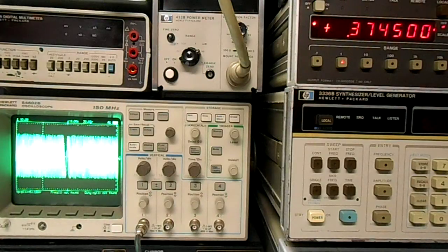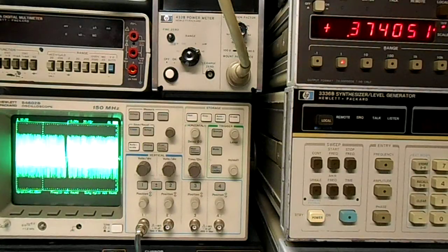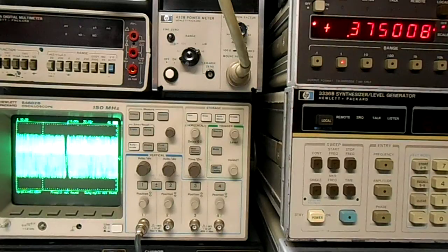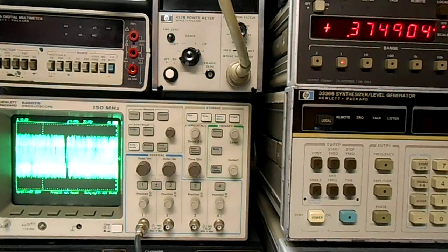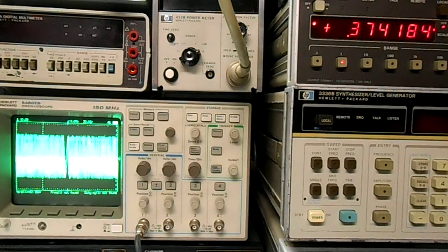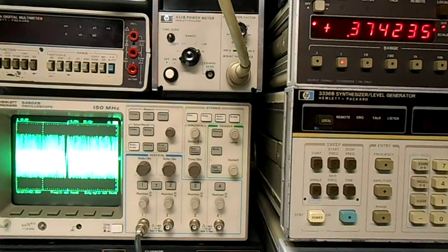Now I have a negative 100 dBm signal connected. You can see it went up a little in voltage, 0.375, 0.374 say. I'm going to begin stepping through the power levels now.